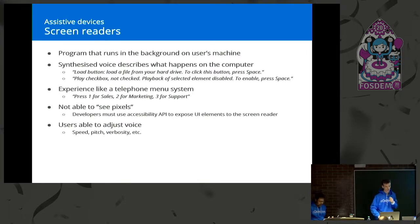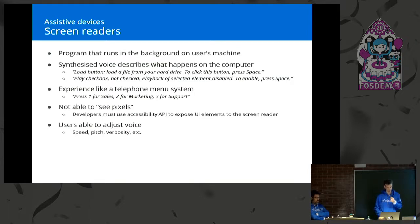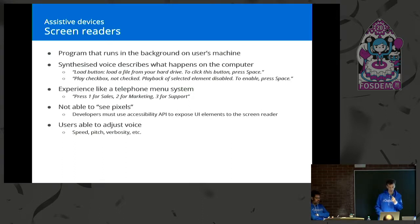When we talk about accessibility, we talk about assistive devices — devices that help somebody to use technology as the rest of us do on a daily basis. The main one for blind people is a screen reader: a program that runs in the background and announces what's happening on the screen. It's a synthesized voice that will announce whatever element currently has keyboard focus. So imagine if you're on a button — the screen reader will tell you it's a 'load' button, what it does, and that it's a button, allowing the blind person to know to click it, perhaps by pressing the space bar. There's sometimes a description giving more information, like that it loads a file from your hard drive.